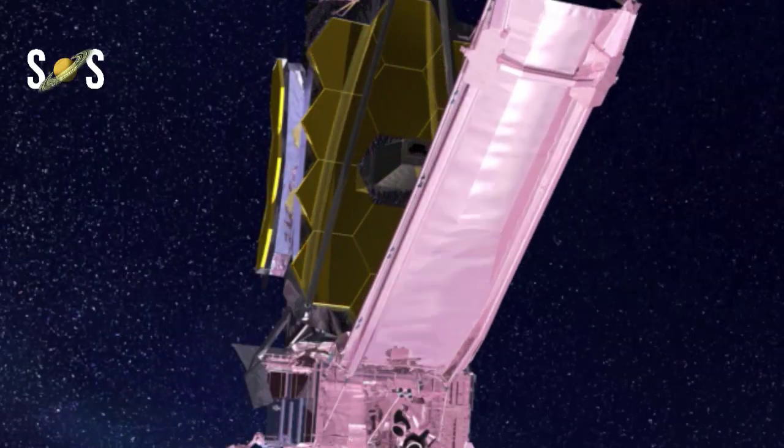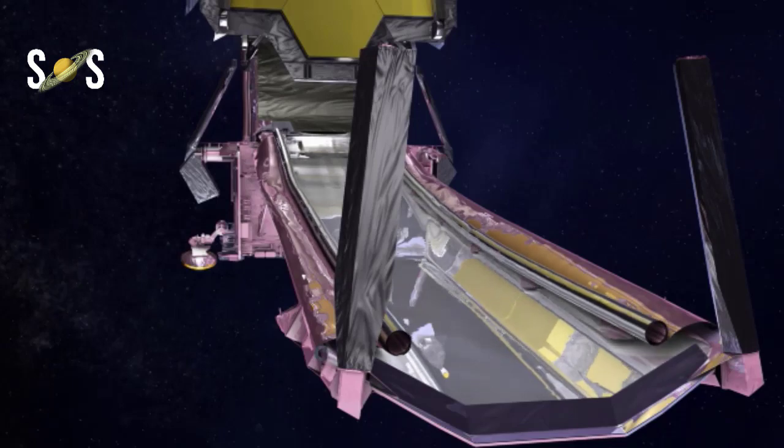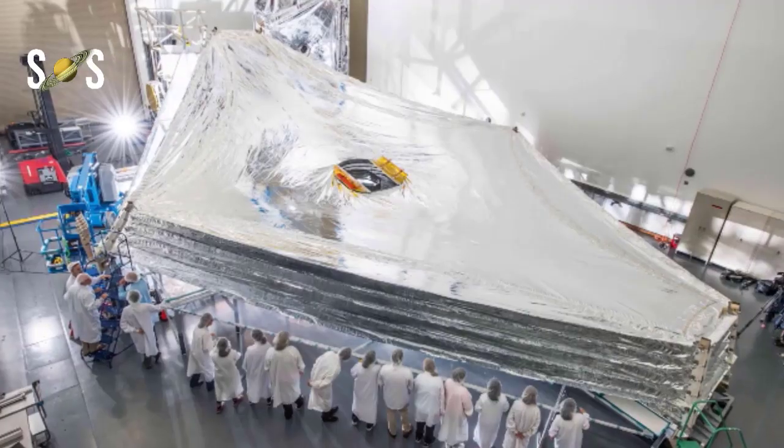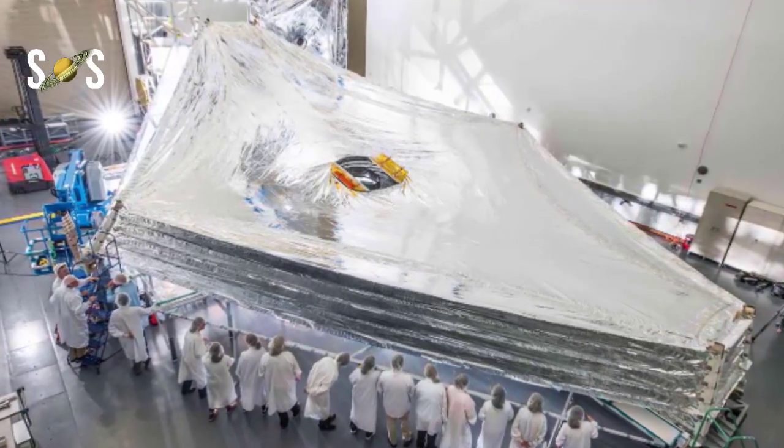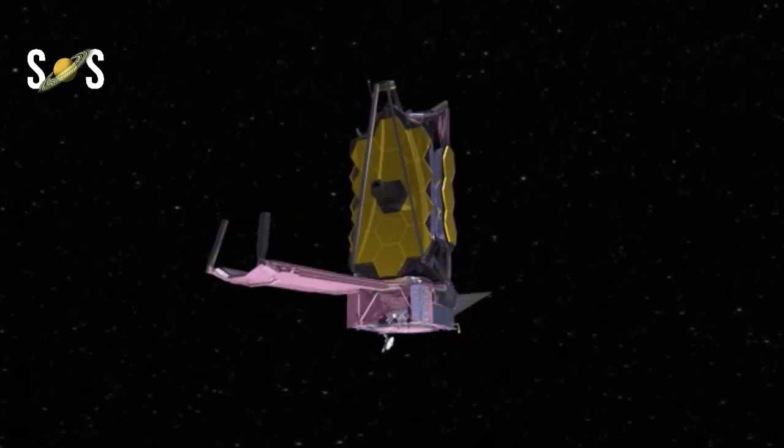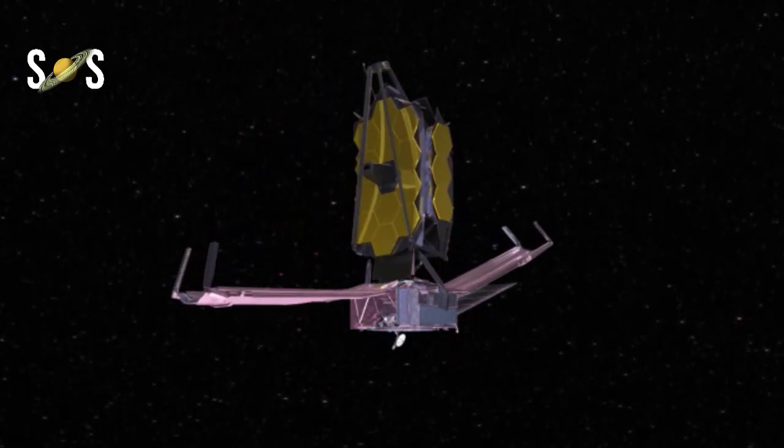The JWST can see about 10 to 15 billion light years. The farthest that Hubble has seen so far is about 10 to 15 billion light years away. The farthest area looked at is called the Hubble Deep Field.